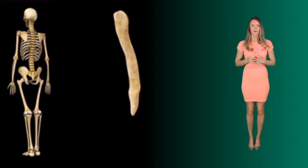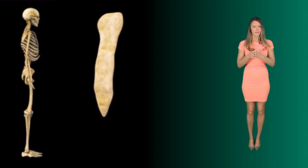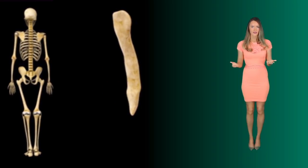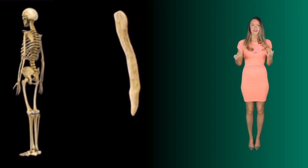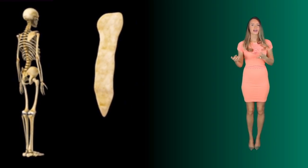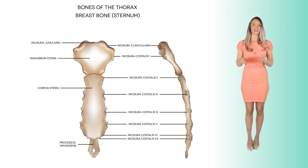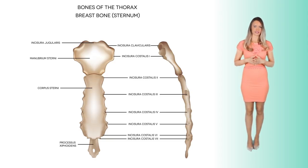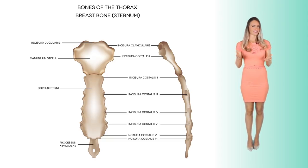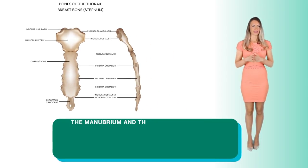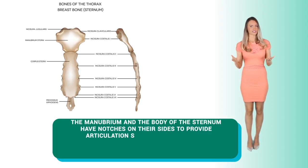The sternum, also called the breastbone, is medial — meaning in the middle — and anterior, or front, of the thoracic cage. It is very flat in nature, giving it a lot of strength. It is long and divided into the manubrium, which is the uppermost part, the body that lies below the manubrium, and above the last part, which is the xiphoid process, that is pointing downwards.